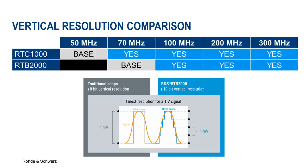Moving on to the two most important parameters that differentiate these devices: bandwidth and vertical resolution. Both devices are upgradable from their base model bandwidths up to 300 megahertz. However, the starting point on the RTB is higher than the RTC. In addition, the analog-to-digital converter on the RTB is 10 bits compared to 8 bits on the RTC, meaning four times the vertical resolution on the RTB, but the RTC will be less expensive for comparable bandwidths.